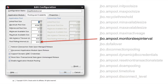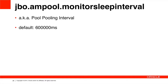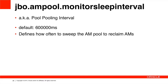The first parameter to discuss is the JBO.AMPool.MonitorSleepInterval parameter, visible from the Application Module Configuration dialog. Commonly known as the pool polling interval, it is set to 600,000 milliseconds — essentially 600 seconds — by default. It defines how often a cleanup thread sweeps the entire pool looking for Application Modules to reclaim: essentially dropping them from the pool so the memory can be reclaimed by the garbage collector and the overall pool can shrink. This raises two questions: how many Application Modules does the sweep monitor reclaim, and how does the pool decide an Application Module is a candidate to be reclaimed?